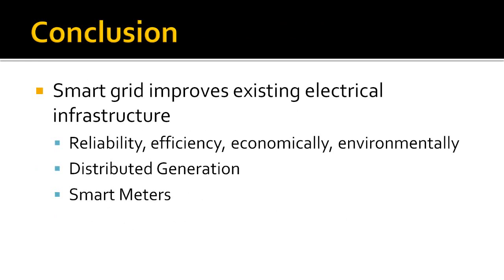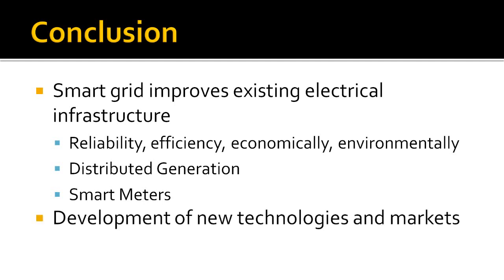Smart grid is an opportunity to improve and upgrade existing distribution systems with modern technology. It will improve the reliability, efficiency, and economy of the power system, as well as address the environmental issues we face today. Distributed generation will allow the use of alternative generation such as solar and wind in residential and industrial applications. With the implementation of smart metering, time-of-use pricing will also help reduce peak demand. Investment into smart grid will also develop new technologies and markets in the near future.